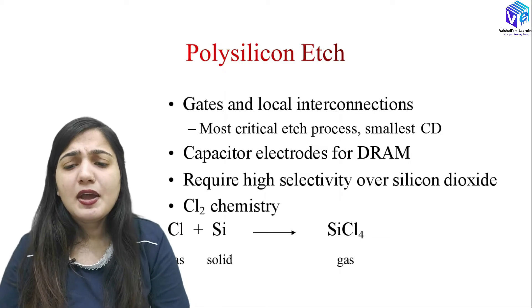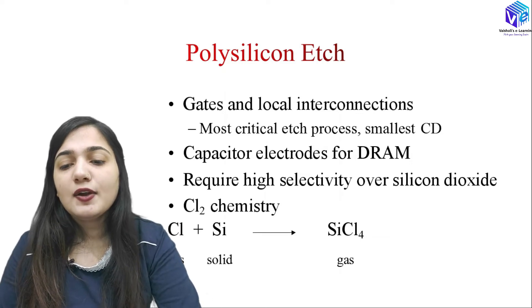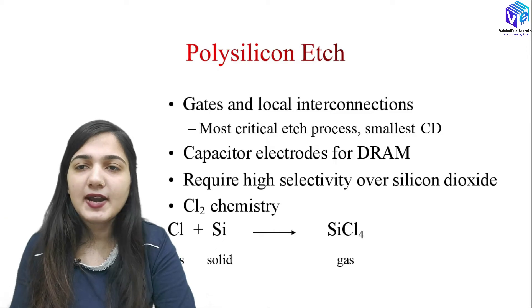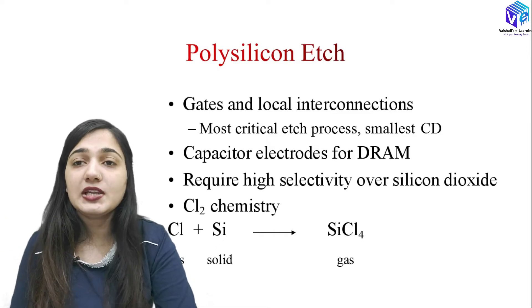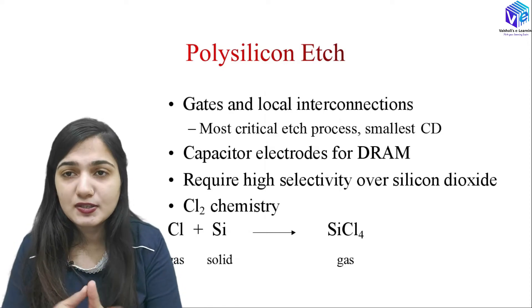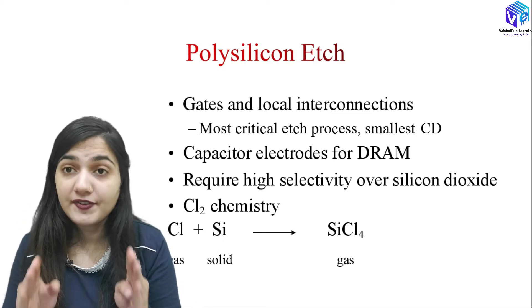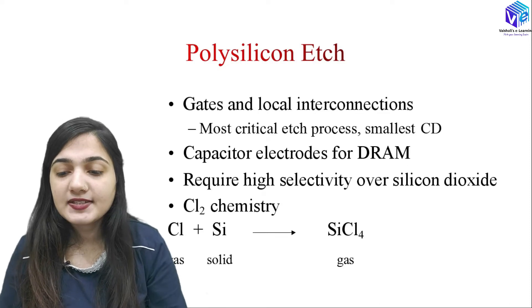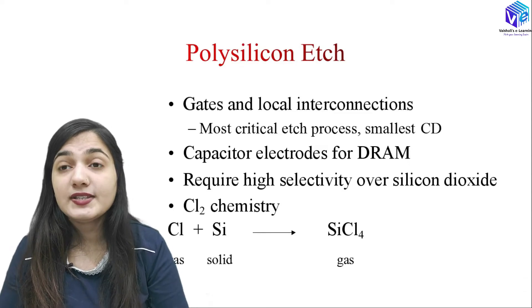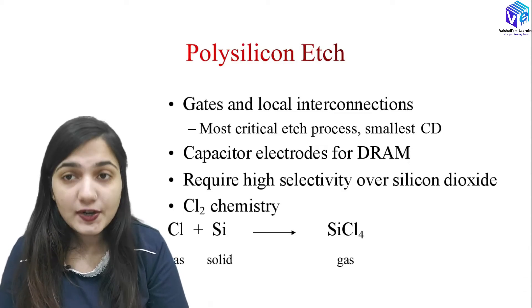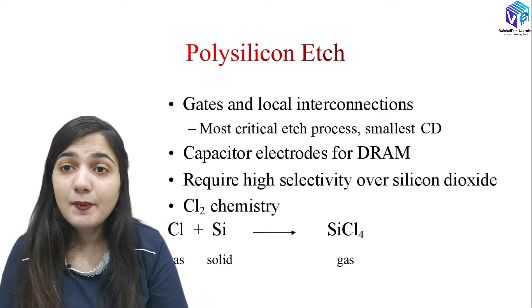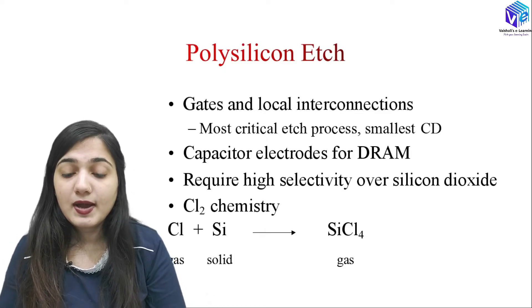Now coming to the polysilicon etch. Why are we using the polysilicon etch? For making the gate and local interconnection. It is the most critical etching process because I have to make the smallest feature size, requiring very controlled etching. It can also be used for capacitor electrodes for DRAM. It requires very high selectivity over silicon dioxide, because otherwise the SiO2 layer would also be etched along with the polysilicon, which we don't want.